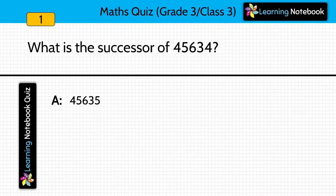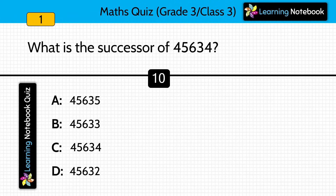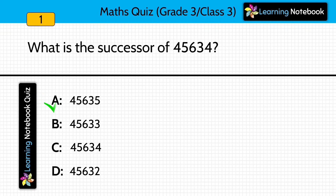Question one: what is the successor of the given number? Read the options carefully. Answer is option A — 45,635 is the successor of the given number. Successor means the next number, so the next number of 45,634 is 45,635.